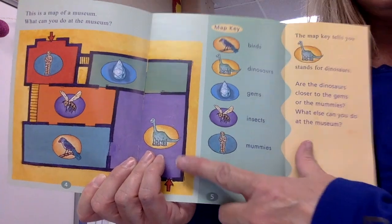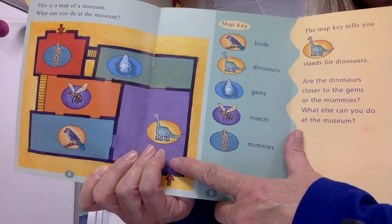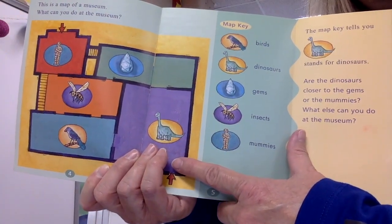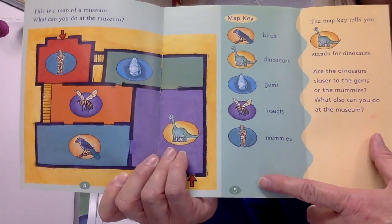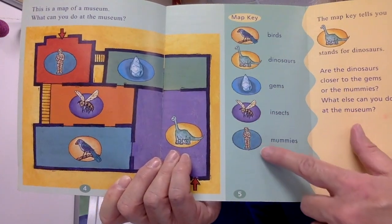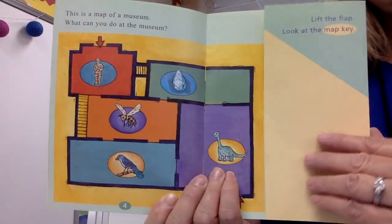Well, here's the dinosaurs. You see the mummies and the gems? Closer to the gems, isn't it? What else can you do at the museum? So you can see all the things that are in the map key. Right, turn the page please. Thank you. I'm talking to myself.